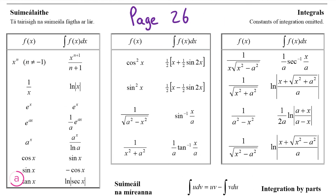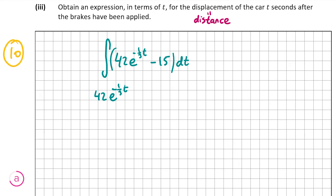Looking at page 26 of the formula and tables book: the integral of e^(ax) = (1/a)e^(ax). Using this to integrate 42e^(−t/3): that's 42e^(−t/3) × (1/(−1/3)). The −15 is a constant so it integrates to −15t. Don't forget the plus c. So 42e^(−t/3) × (1/(−1/3)) = −126e^(−t/3), giving −126e^(−t/3) − 15t + c.